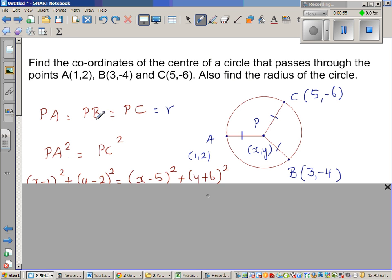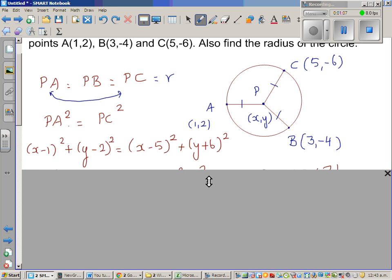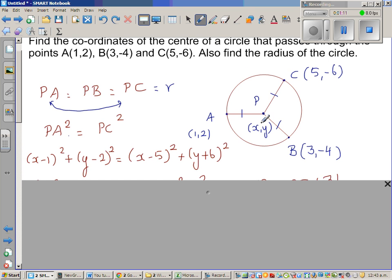So if AP equals BP equals CP, I can equate these two. So I can say, squaring both sides, PA² equals PC². Now using the distance formula, that is (x-1)² + (y-2)² and PC would be (x-5)² + (y+6)².